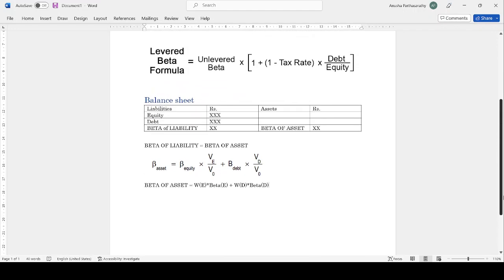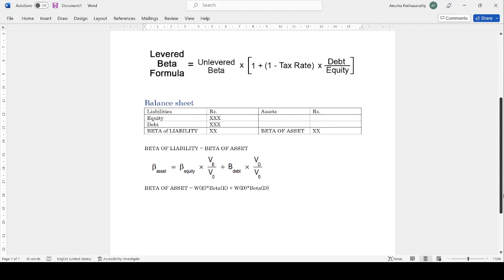So to conclude, whenever beta of debt is not given or beta of debt is given as zero, we will prefer using this formula: unlevered beta times 1 plus (1 minus tax rate) times debt by equity.